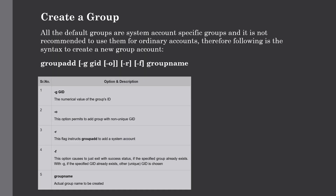The next topic is how to create a group. We need to create groups before creating any account, or we can make use of existing groups in our system. All groups are listed in the /etc/groups file — just apply the cat command to get all the details. All the default groups are system-specific groups and it is not recommended to use them for ordinary accounts. The syntax for creating a new group account using groupadd is given here.